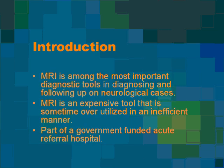MRI is among the most important diagnostic tools in diagnosing and following up on neurological cases, and therefore it's going to be an example of the radiological examination that the decision tree can be used to determine the utilization for. However, MRI is an expensive tool that is sometimes over-utilized in an inefficient manner.